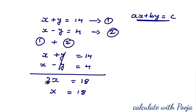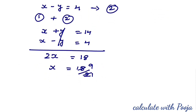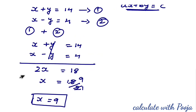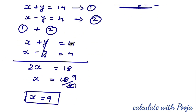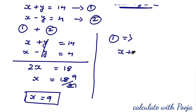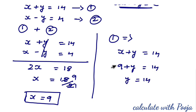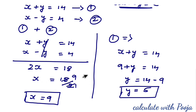So 2x = 18, which gives x = 18/2 = 9. Substituting x = 9 into equation 1: 9 + y = 14, so y = 14 − 9 = 5. Therefore x = 9 and y = 5. This is how we solve a linear pair of equations by elimination method.